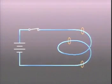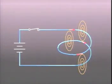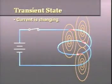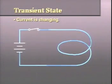The time that elapses when a circuit is first switched on and the current builds from zero to its maximum value is known as the transient state.